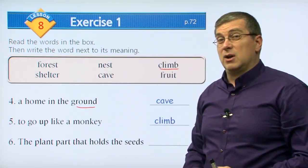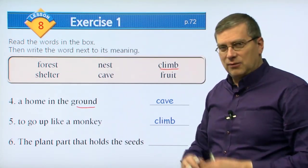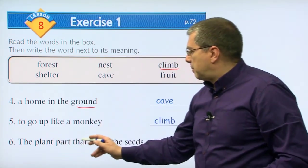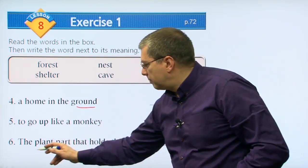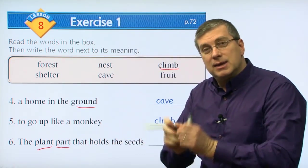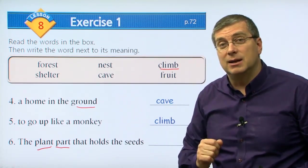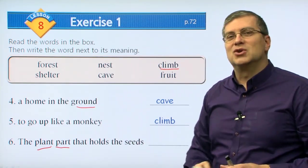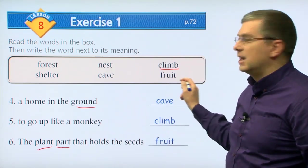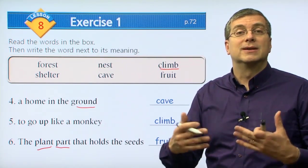Be careful if you climb something - be careful you don't fall off. Number six: the plant part that holds the seeds inside. Usually they're good to eat, like a banana, an apple, or watermelon. This part holds the seeds. What is it? Of course, we're looking at fruit. Fruit is the part of the plant that holds the seeds.